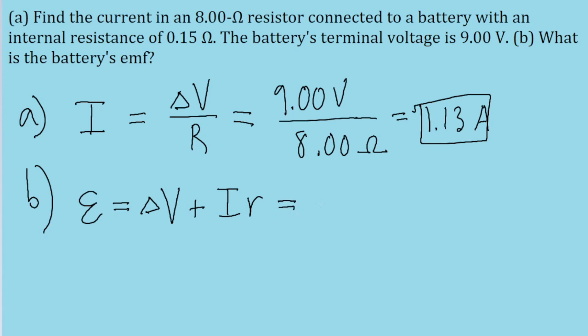Let's just plug in the values. That's 9.00 volts plus the current that we found in part A, 1.3 amps, multiplied by the internal resistance of 0.15 ohms. And this is equal to 9.17 volts. And that is the EMF through the battery.